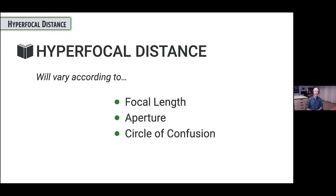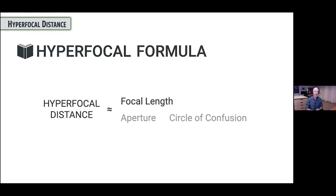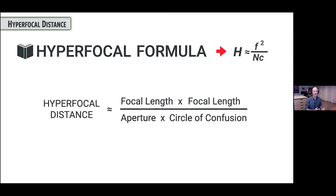We need to be able to do this mathematically. You don't need to learn this math or memorize it, but there is math behind it, which makes me a little more confident that something real is going on here. If you want to measure where the hyperfocal distance is, you can figure it out by multiplying the focal length by the focal length, putting that over the aperture you have chosen, and then multiplying that by what we consider to be in focus — which is our circle of confusion.